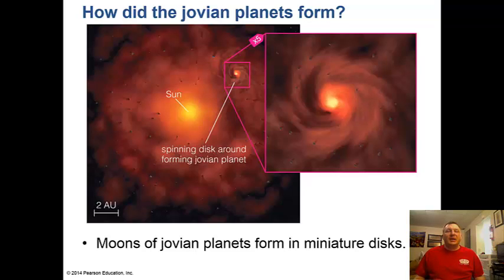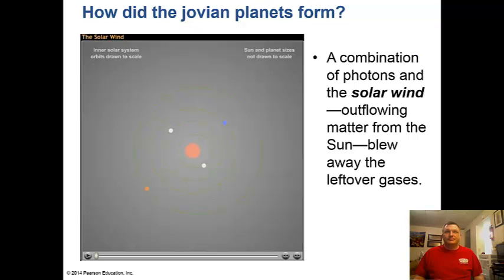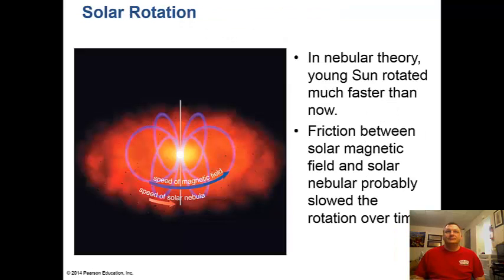The moons of the jovian planets formed in miniature disks, their own little solar systems. A combination of photons and the solar wind - the outflowing matter from the Sun - blew away the leftover gases around these jovian planets. The young Sun 4.5 billion years ago rotated much faster than it does now. Friction between the solar magnetic field and solar nebula possibly slowed the rotation over time.